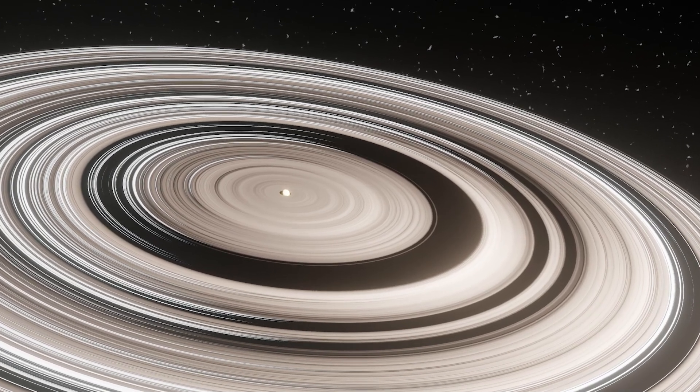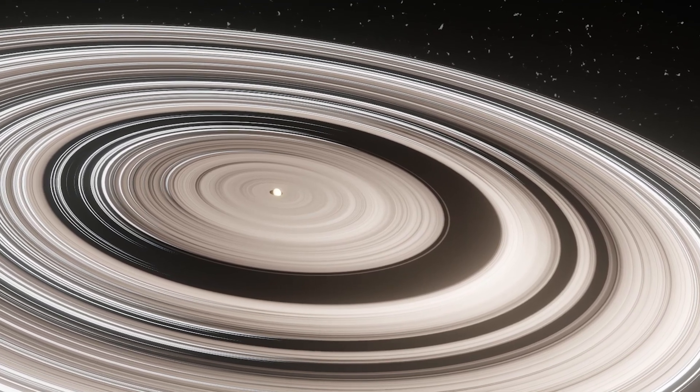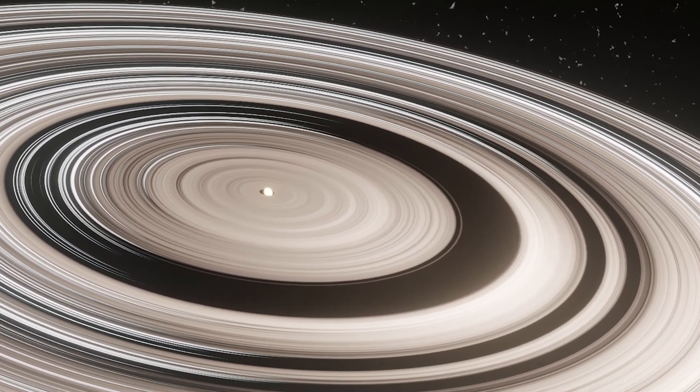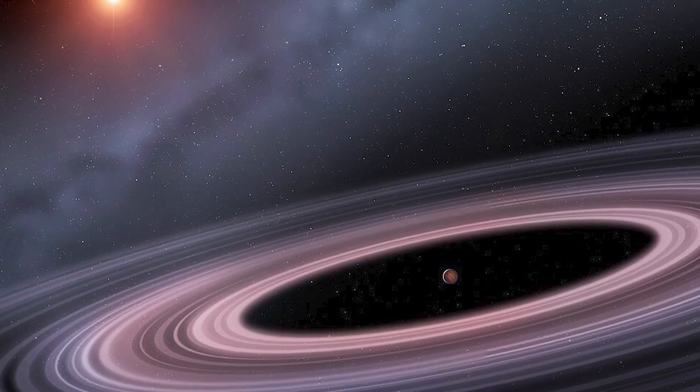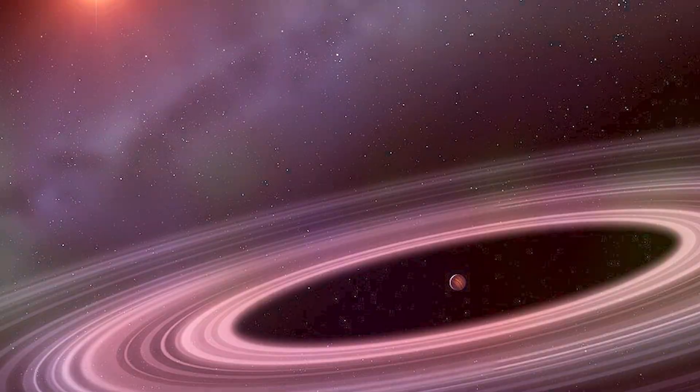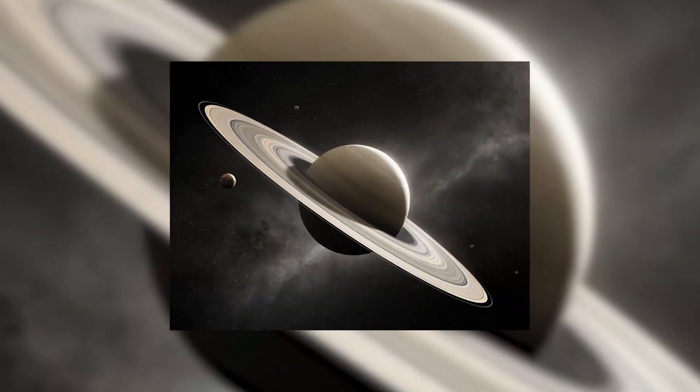Its most astonishing feature is a colossal ring system comprising 30 rings, each spanning tens of millions of kilometers. The entire system stretches about 120 million kilometers across, dwarfing Saturn's rings by 200 times.